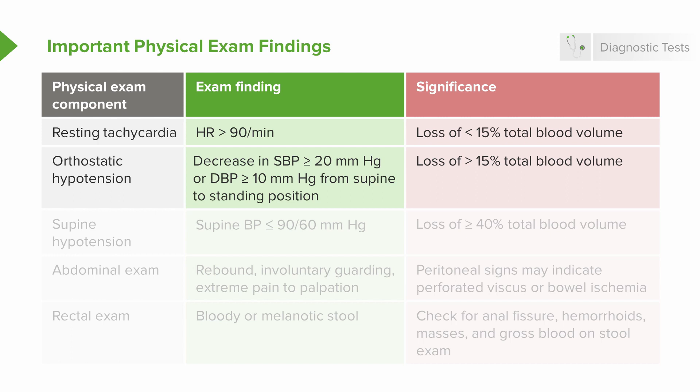If the patient is already hypotensive while lying flat — generally a blood pressure less than 90 over 60, though always compare to their known baseline — this indicates they have lost greater than 40% of their total blood volume. This is one of your sicker patients.